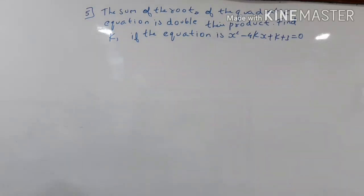Good morning friends. Today we are doing exercise 2.5, fifth sums. The sum of the root of the quadratic equation is double the product. Find k if the equation is x squared minus 4kx plus k plus 3 is equal to 0.